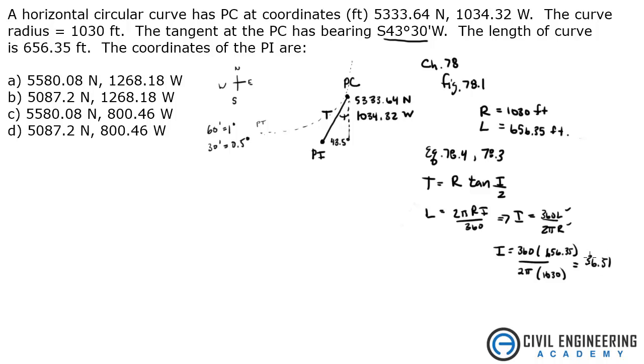36.51. Now I can plug this back into this guy, and let's solve for that. So T equals R, which is 1030 times the tangent of 36.51 over 2.